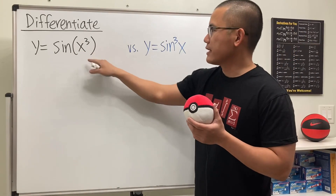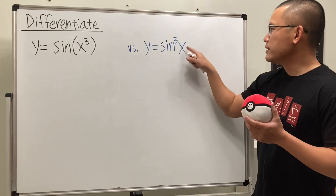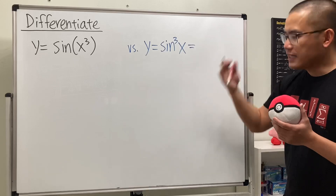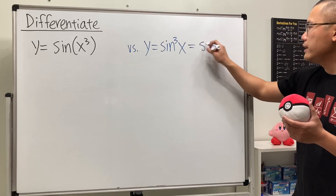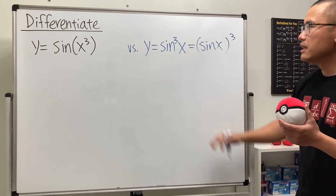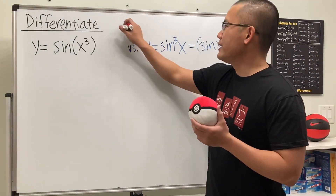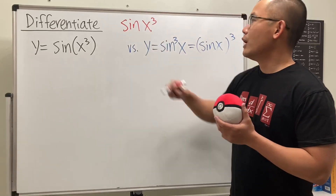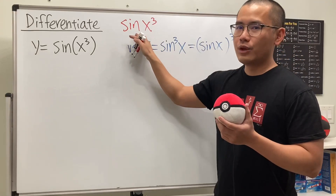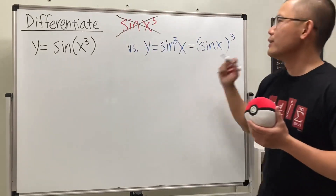When we have a parenthesis with x to the third power inside, this means we have three x's multiplying inside. But if we don't have a parenthesis and the three is right on sine, this means sine x times sine x times sine x — we write that as sine x, all in parentheses, to the third power. Please don't ever write it without a parenthesis, because it's a super bad notation — we can't tell which one you mean.